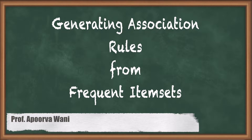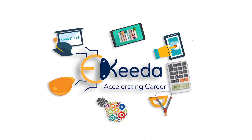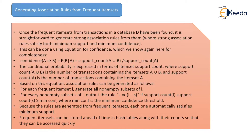In this video we are going to see how we can generate association rules using frequent itemsets. Once the frequent itemsets from the transactions in a database have been found, it is straightforward to generate the strong association rules from them, where the strong association rules satisfy both minimum support and minimum confidence.